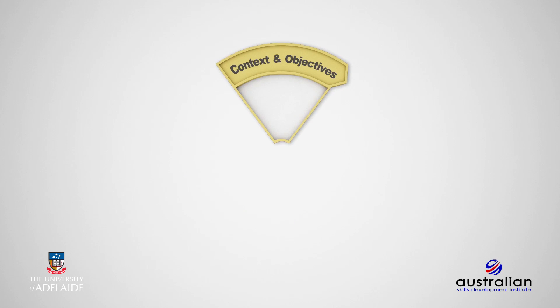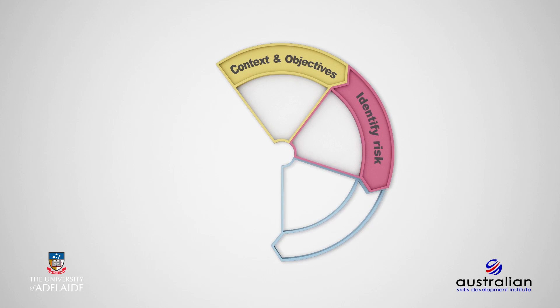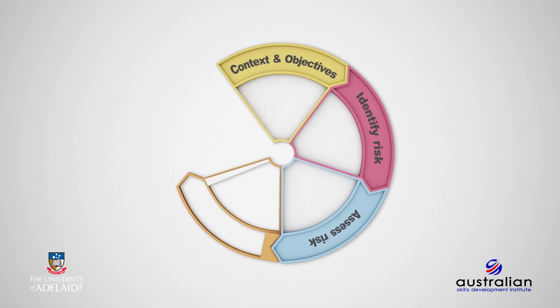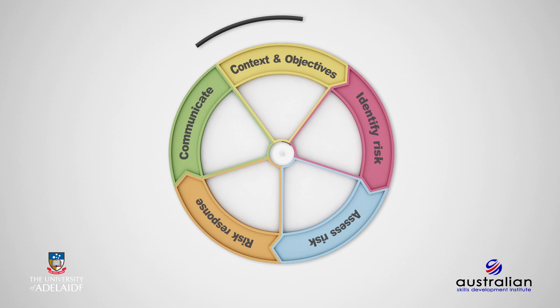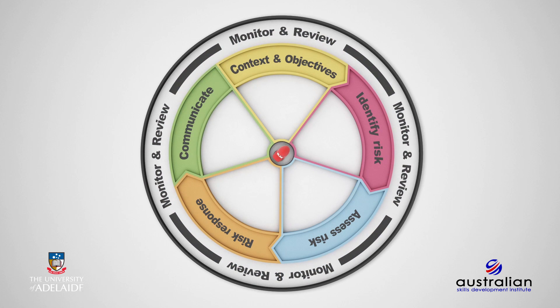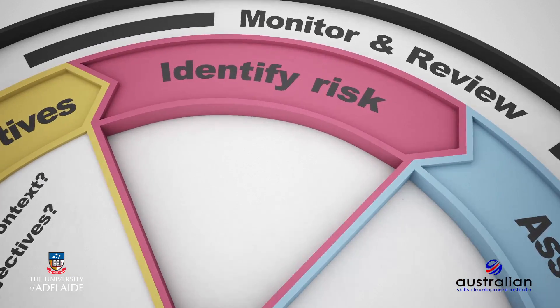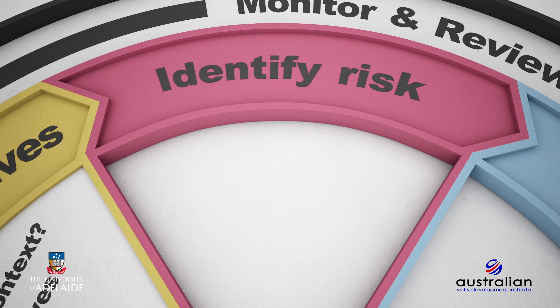In Section 1, we introduced the concept of risk management and the importance of managing risk throughout the project lifecycle. We reinforced the importance of risk management as a process and introduced you to the Risk Management Canvas framework, which captures the stages of the risk management process. This week, we will discuss the process of identifying risks associated with your project.